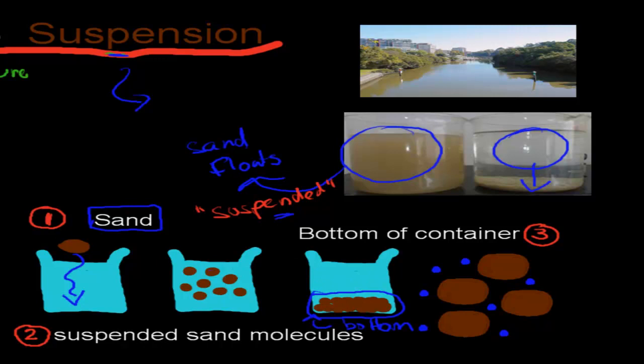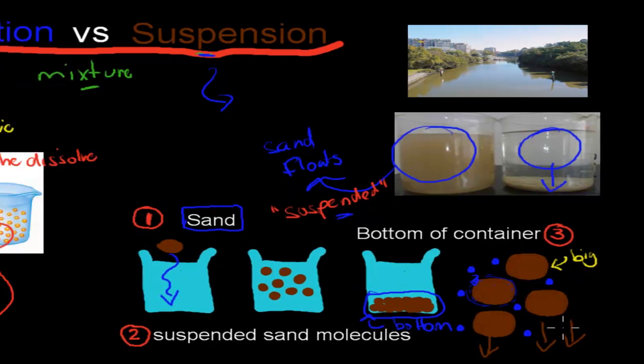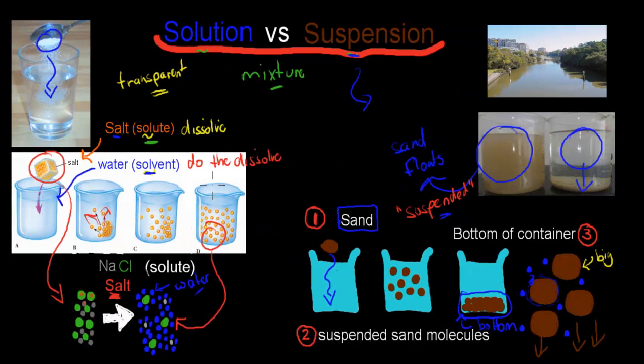The reason being is because in sand particles, the actual particles are quite big. So these are big particles. That means these water particles can't do the same thing. They can't all dissolve or even completely surround these big molecules. And that means eventually, these big molecules are going to be so heavy that they're going to drop to the bottom. So with a suspension, we have them dropping to the bottom, whereas in a solution, they stay dissolved within the actual mixture, in the actual solution.